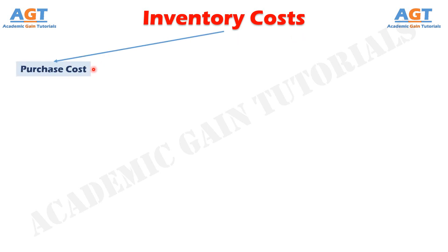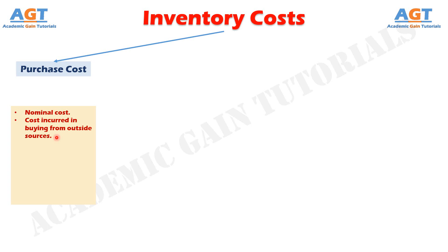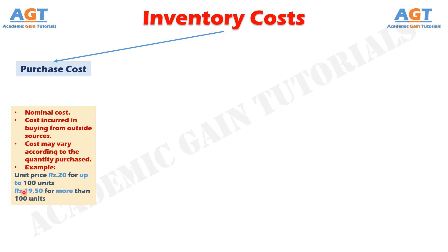Component number one is Purchase Cost. This is basically the nominal cost of an inventory. It is the cost incurred in buying from outside sources, and it would be known as production cost if the items are produced within the organization. The cost is constant for a unit but may vary according to the quantity purchased. For example, the unit price is 20 rupees for up to 100 units, and 19.50 rupees for more than 100 units.